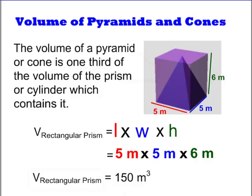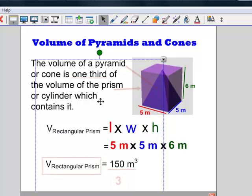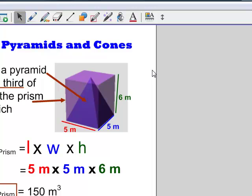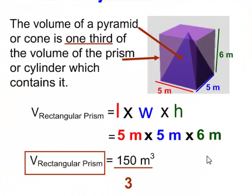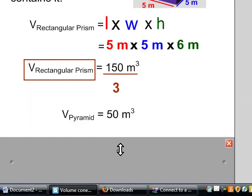Next, we use our rule. We know that the volume of a pyramid or cone is one-third of this volume. So that means that the volume of the pyramid inside the prism is 150 meters cubed divided by 3. So the volume of our pyramid is 50 meters cubed.